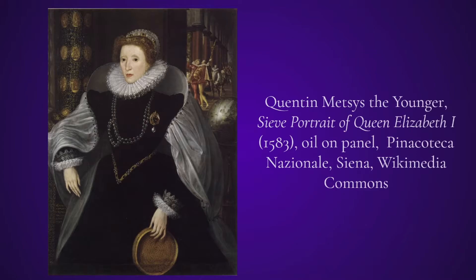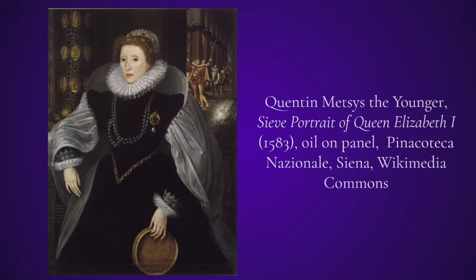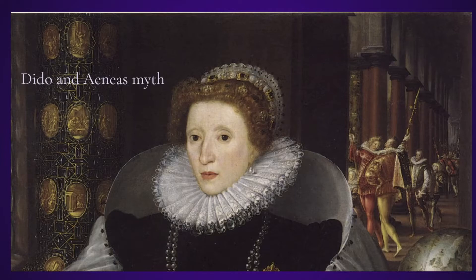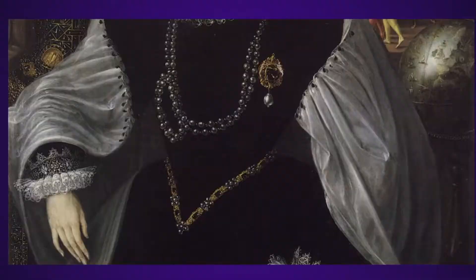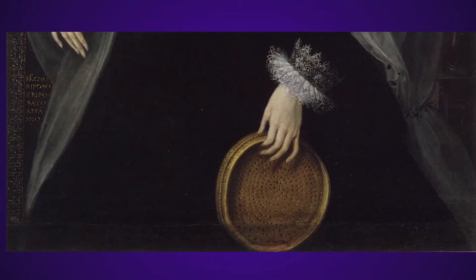In ancient Rome, Vesta was the goddess of hearth and home, and Vestal Virgins took vows of chastity. Tuccia was the mythological priestess of Vesta who was accused of unchasteness, so she proved her virtue by performing a miracle in which she carried a sieve full of water from the river Tiber to Vesta's temple without spilling a drop. Additionally, in this portrait there is a pillar on the left behind Elizabeth, which is a symbol of imperialism, decorated with roundels that depict the story of Dido and Aeneas, in which Aeneas rejected Dido's advances and then went on to found the Roman Empire. In this sense, there is the previous theme of androgyny, in which Elizabeth is identified with the male figure Aeneas, who founded Rome, and not with the widowed queen of Carthage, Dido. You can see the globe behind Elizabeth, which is also a symbol of England's imperial ambitions.